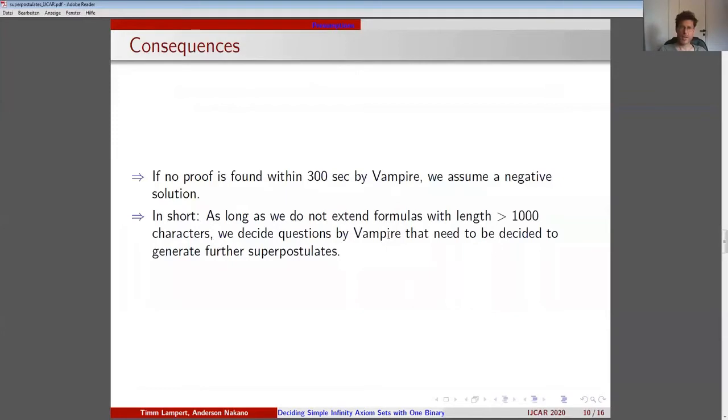So if no proof is found by Vampire within 300 seconds, we assume a negative solution. In short, as long as we do not extend formulas with lengths greater than 1000 characters, we decide questions that need to be decided to generate further superpostulates by running Vampire. The reliability of this assumption is based on extensive experience. But of course it is not a logical theorem, and so it may induce that an axiom set that we generate is in fact not an infinity axiom set but refutable. However, this is unlikely, since if the problem to be solved has a positive solution, Vampire usually finds it almost immediately given the length of the formulas.